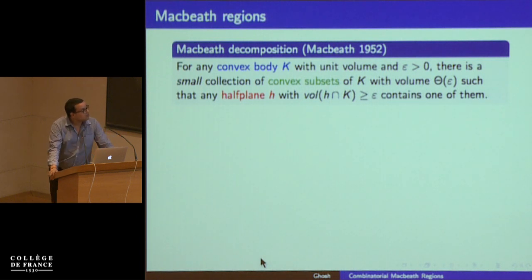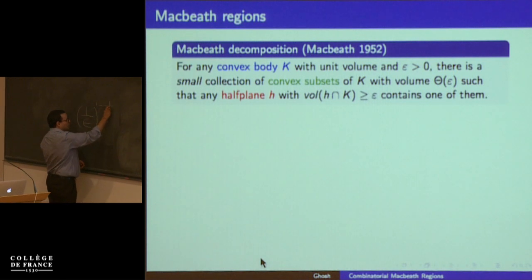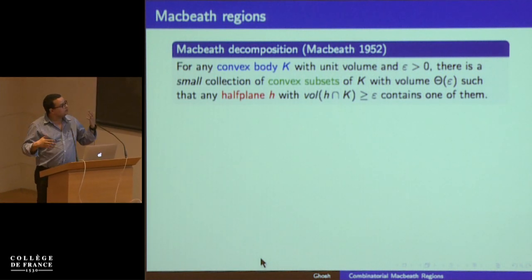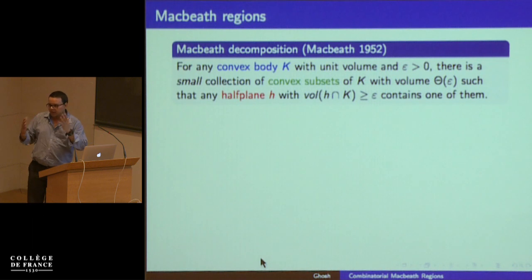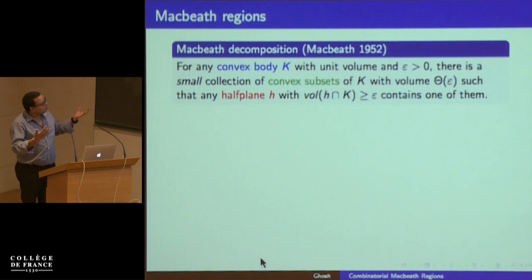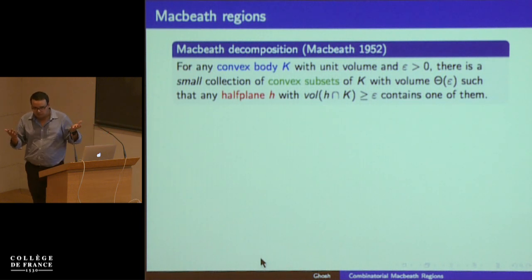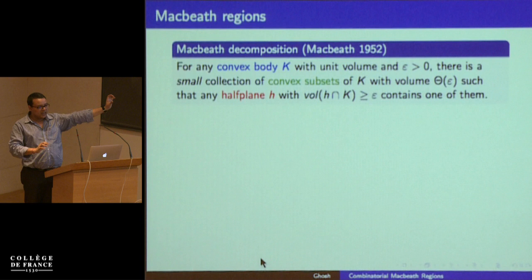This work is motivated by a result of Macbeth from 1952, where he proved a really incredible result. Let's say you have a unit volume convex body in Rᵈ and a parameter epsilon. For this convex body K, you can build a small collection of convex subsets of K, each of volume theta epsilon, satisfying a special property: if you have any half-plane in Rᵈ whose intersection with K has volume greater than epsilon, then you will find a convex set from this family completely contained inside that intersection.